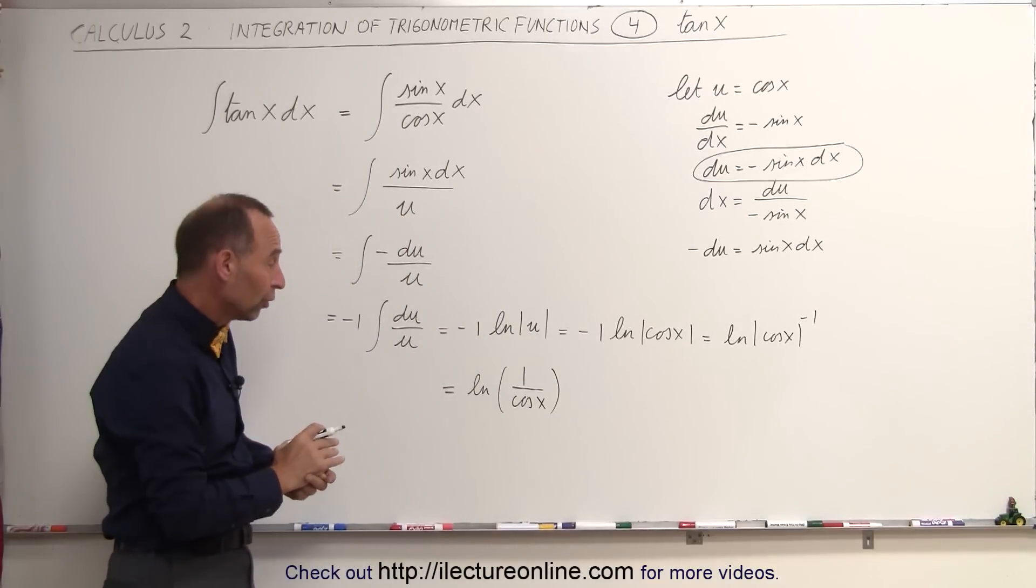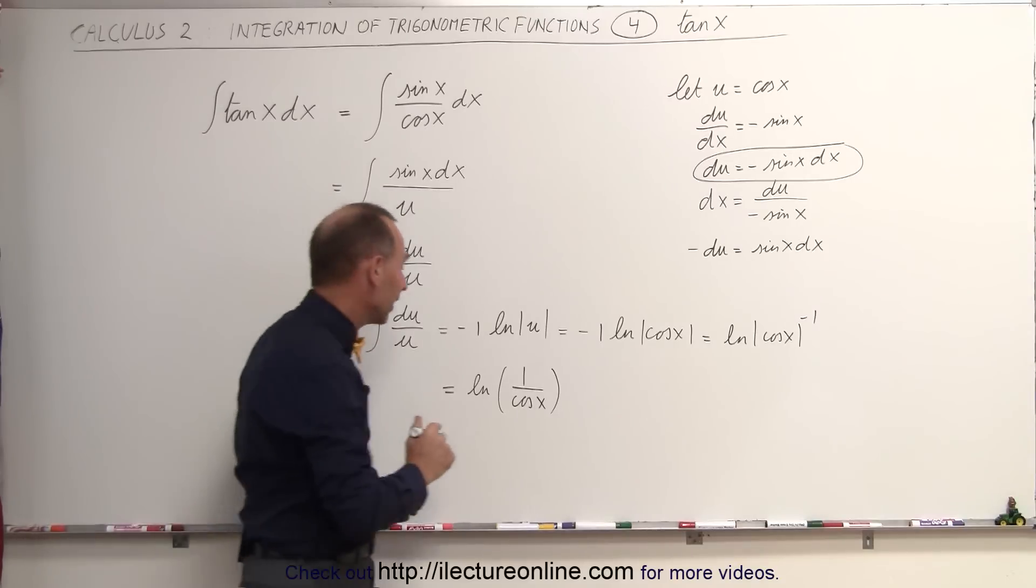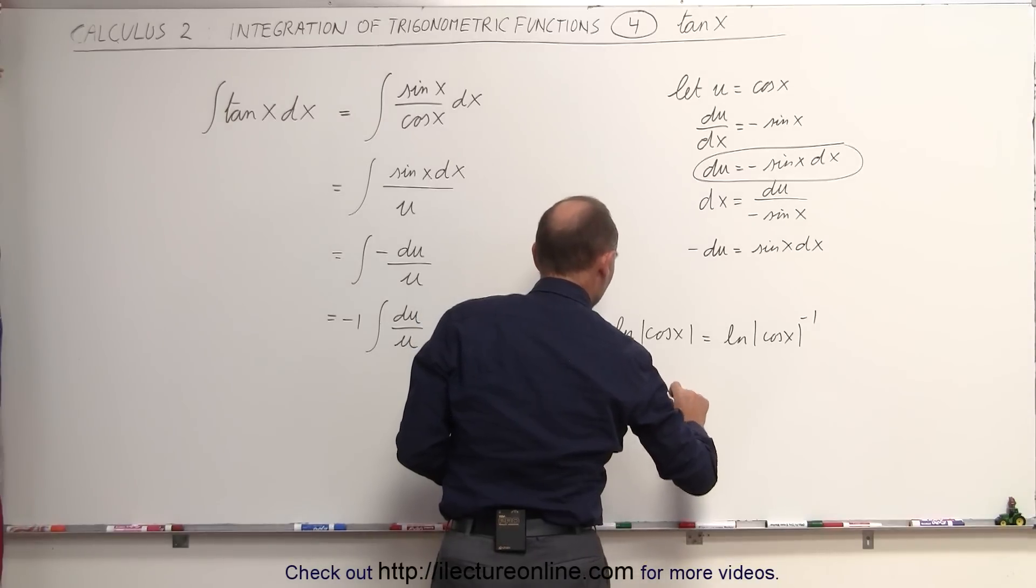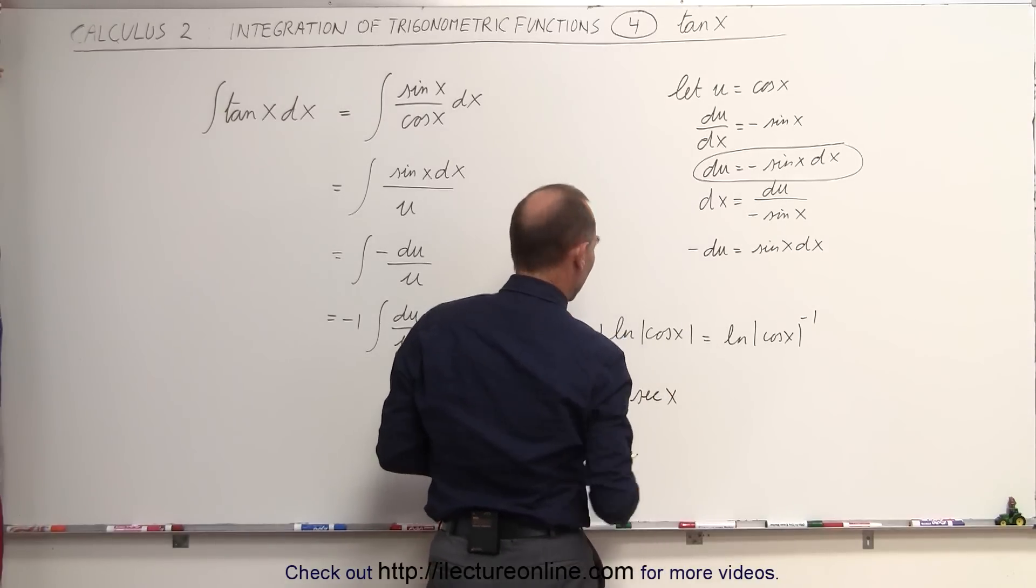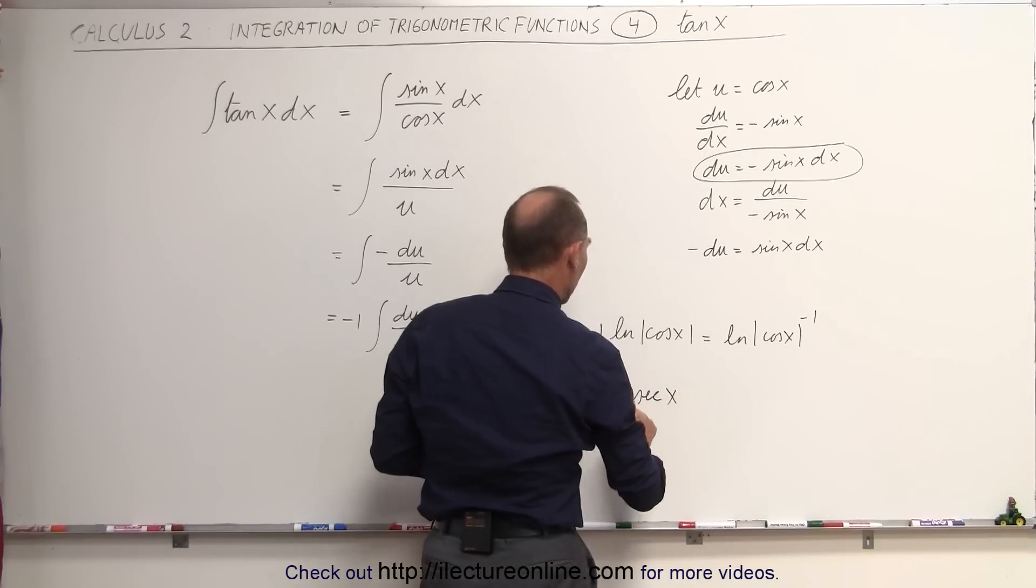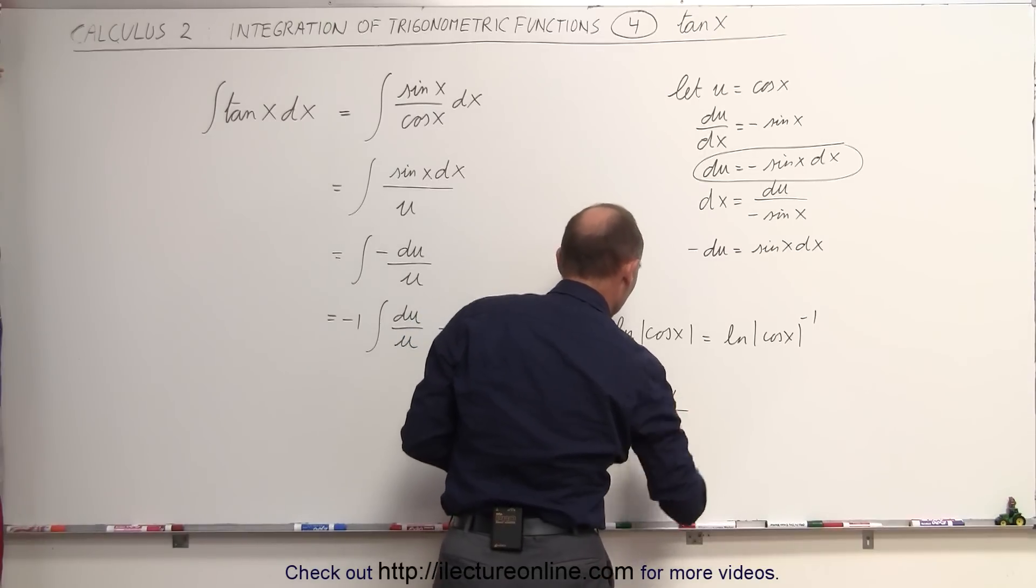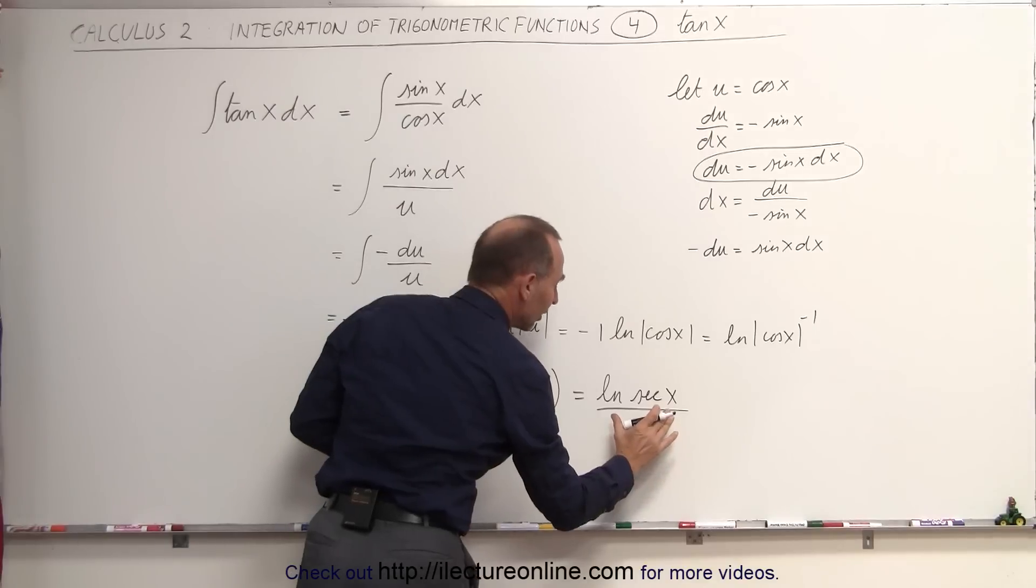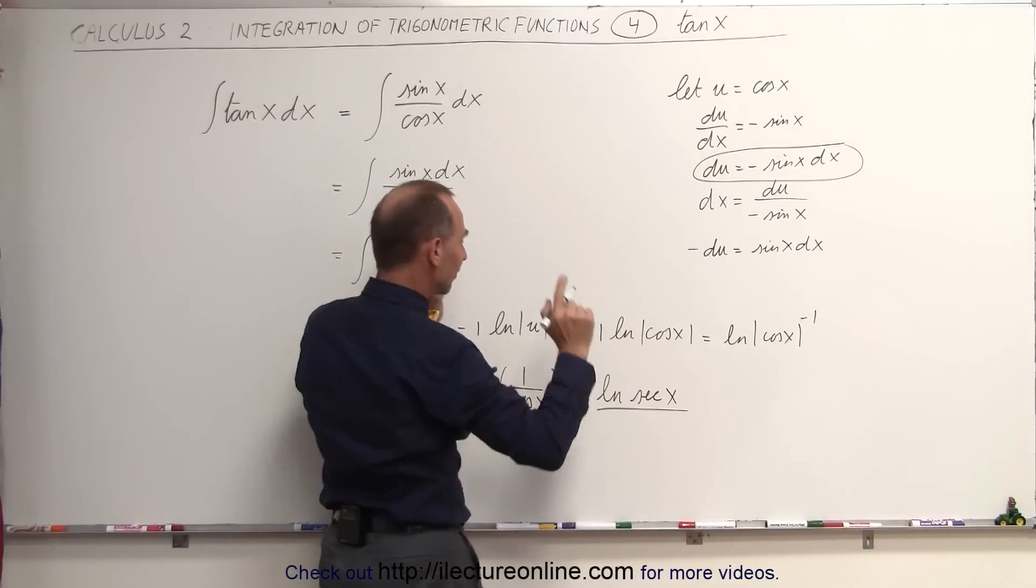And then finally, 1 over the cosine of x is equal to the secant of x. So this can now be written as the natural log of the secant of x. I dropped the absolute value signs because we know that there's certain limits to the secant of x. We just need to make sure that we know how to integrate that. So it turns out that the integral of tangent of x can be written as the natural log of the secant of x.